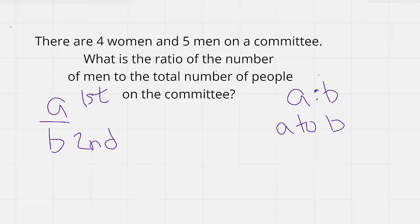We need to read through this problem again and figure out what our ratio is going to look like. It says there are four women and five men on a committee. They want the ratio of the number of men to the total number of people on the committee.